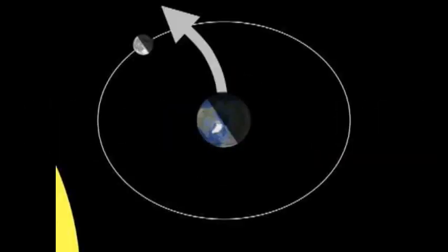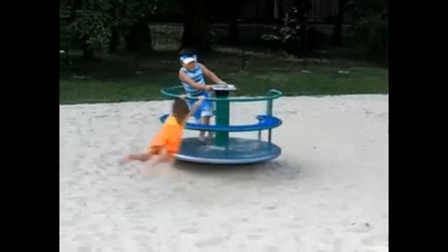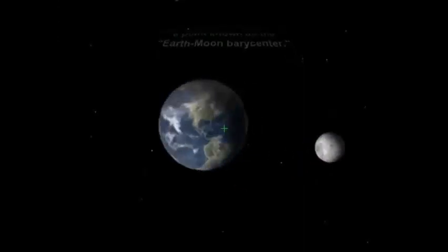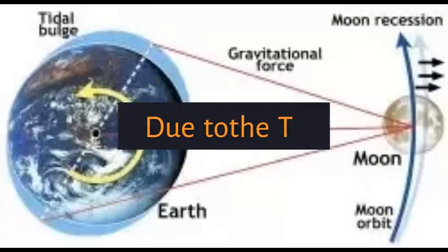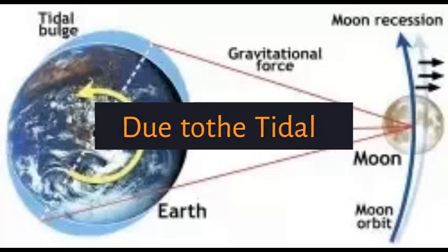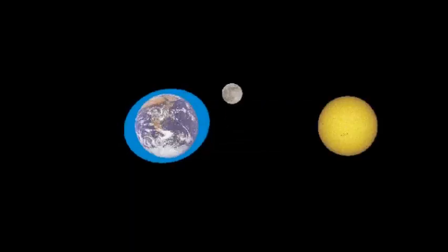This phenomenon is similar to the experience one feels on a children's roundabout. The faster the round, the stronger the feeling of being thrown outwards. Thus, the increased movement of the moon due to the tidal force causes the moon to move away from the Earth.